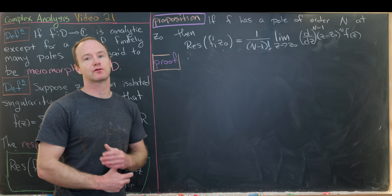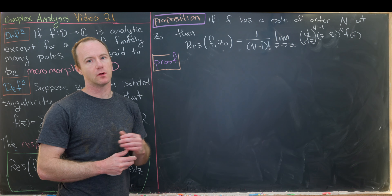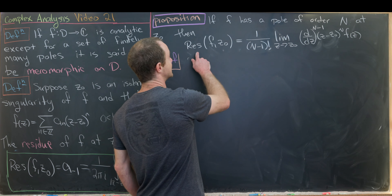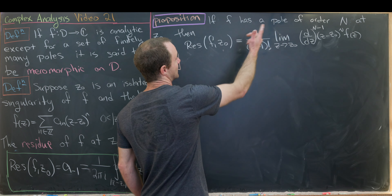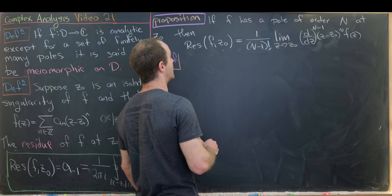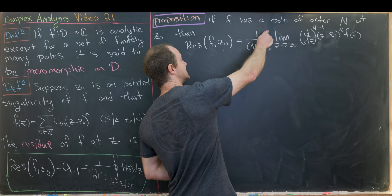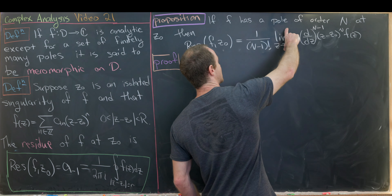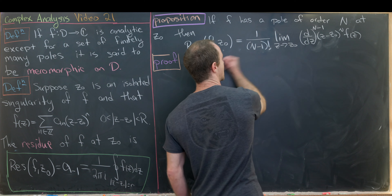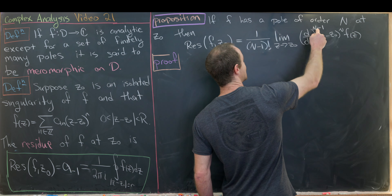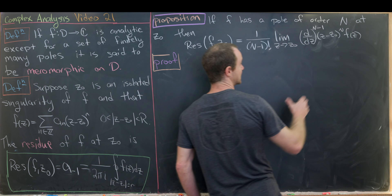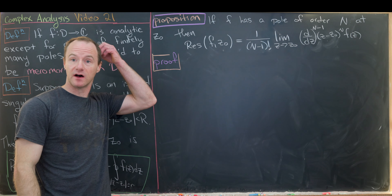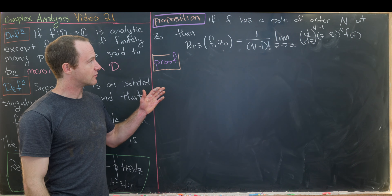The general formula for the residue at z₀, where z₀ is a pole of order n, is: 1/(n−1)! times the limit as z → z₀ of the (n−1)-th derivative of (z − z₀)ⁿ · f(z).